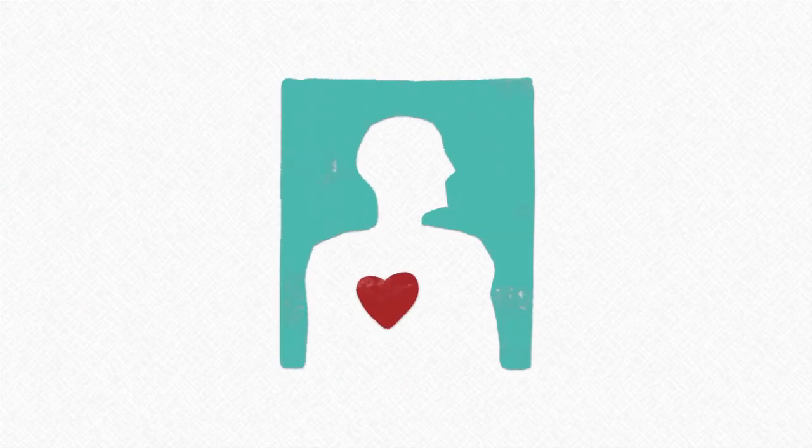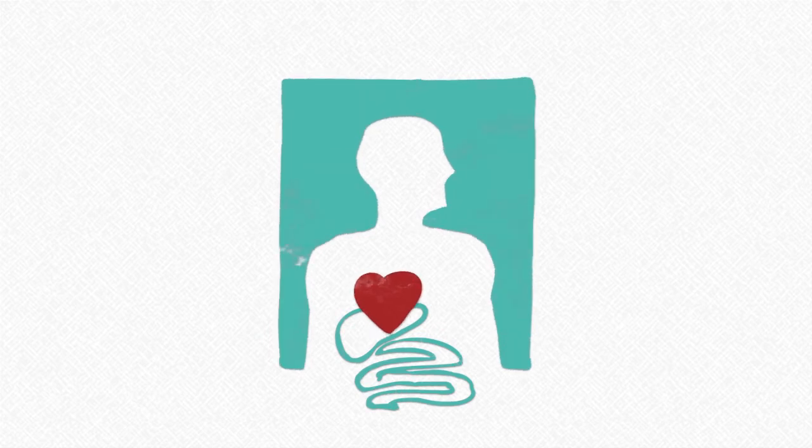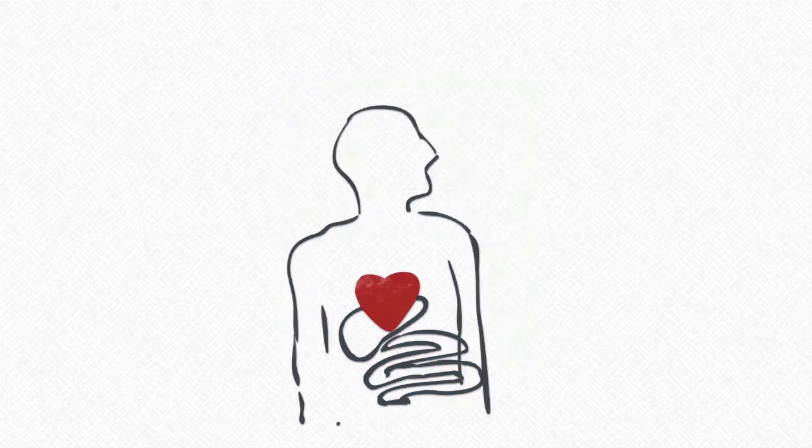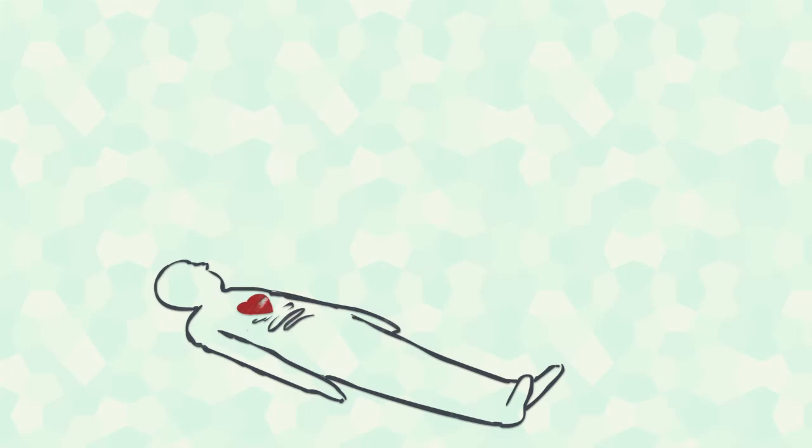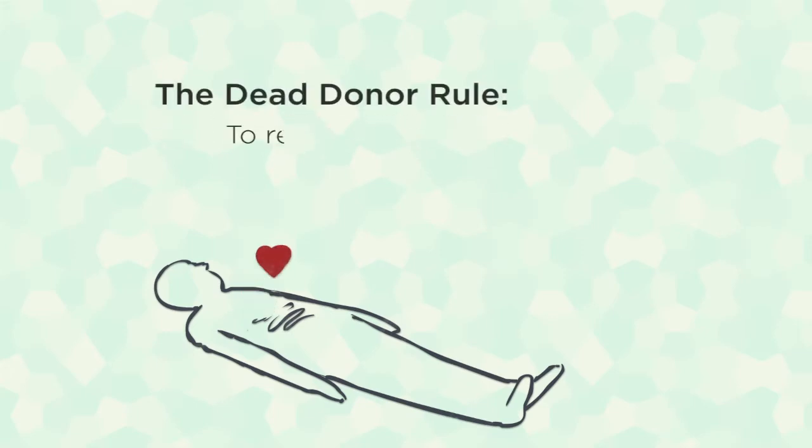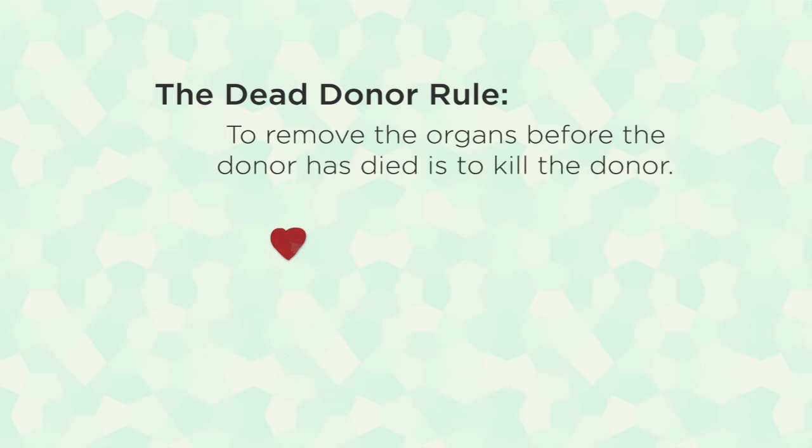And mistaken declarations of death have even been made by emergency medical technicians in the past few years. The question of what should count as death has more recently become intertwined with the question of when it is appropriate to harvest, as they say, such life-critical organs as hearts or livers that have been donated for transplantation. A plausible answer is only after the donor has died. This requirement has come to be known as the dead donor rule. The thought here is obvious: to remove organs critical to life before the donor has actually died is to kill the donor.